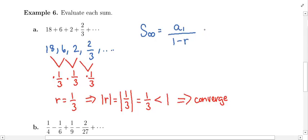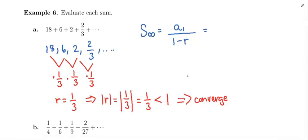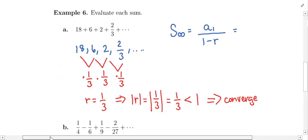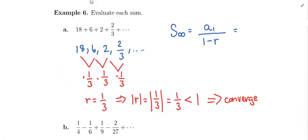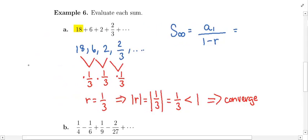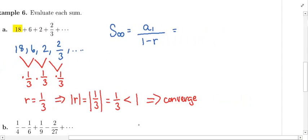We just need to plug in A1 and R. We already have R — R is 1/3. A1 is the first term of the sequence, which is clearly 18. So we plug in: A1 is 18, divided by 1 minus the R value of 1/3.